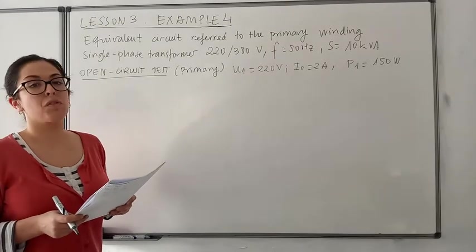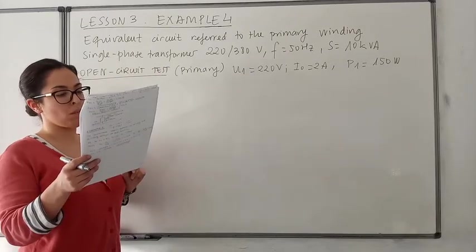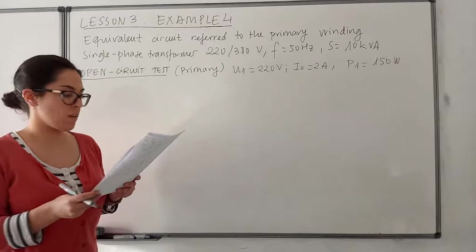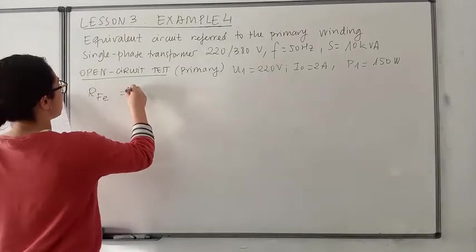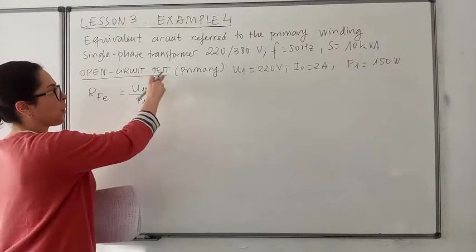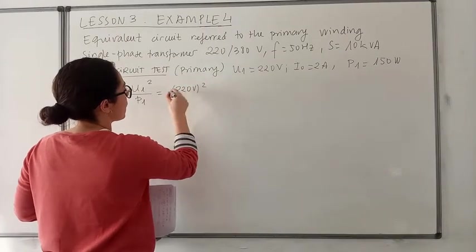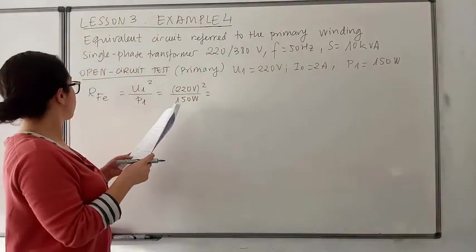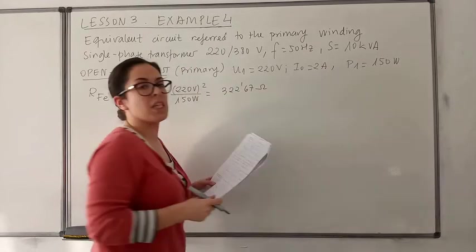For obtaining the equivalent circuit from the open circuit test, we will obtain two magnitudes: the resistance of iron losses and the magnetizing reactance. For obtaining the resistance of iron losses, you need to divide the square of the voltage by the active power measured in the open circuit test. The square of the voltage divided by the power losses will give a value of the resistance of iron losses expressed in ohms.